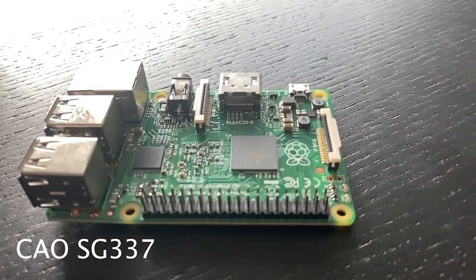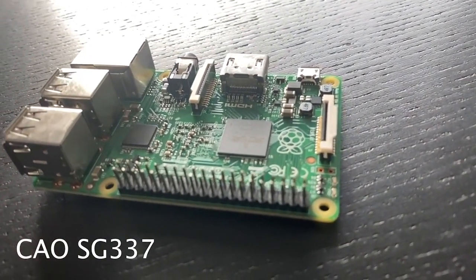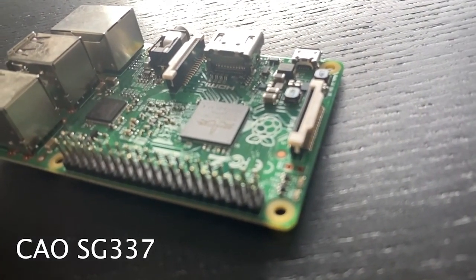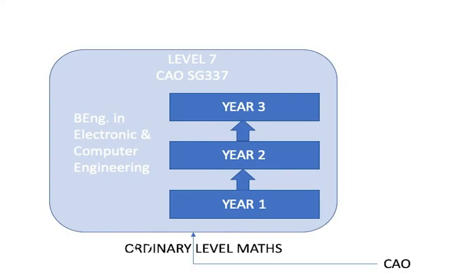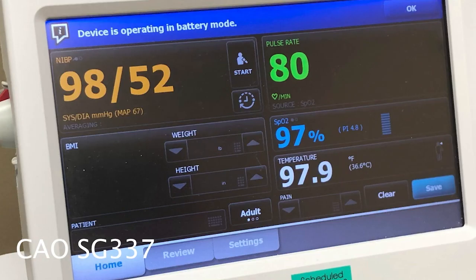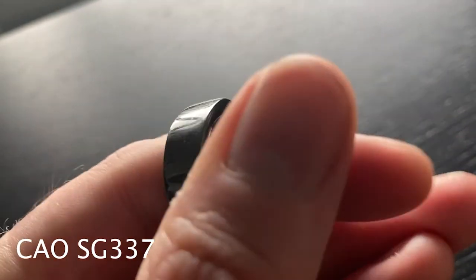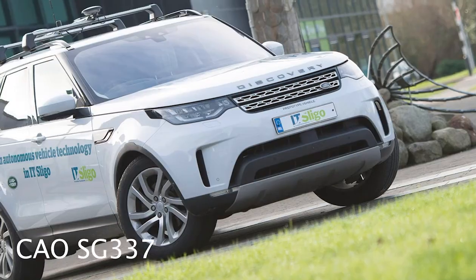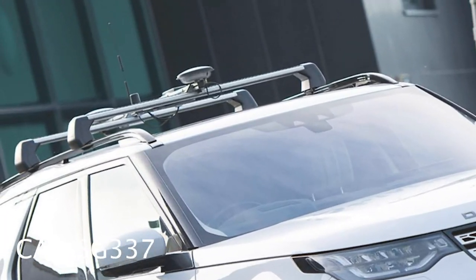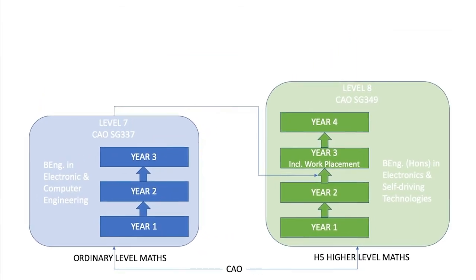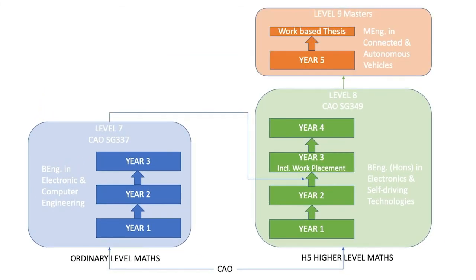If you're interested in technology or engineering but are not doing higher level maths, why not consider our level 7 in Electronic and Computer Engineering? This is a three-year program that looks at the design and development of embedded electronic systems - these are the medical devices that keep us healthy, the consumer devices that keep us entertained, or the controlled systems that keep us safe on the road. You can then progress on to the level 8 in Electronics and Self-Driving Technologies and from there to the masters. Check out the link below for more information.